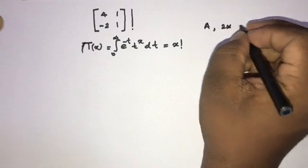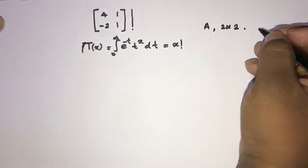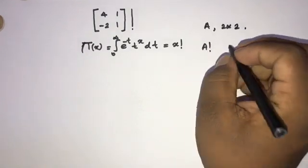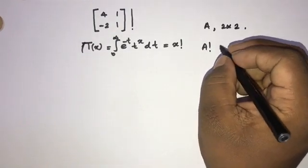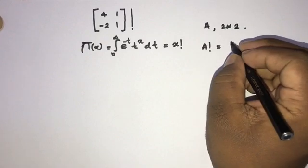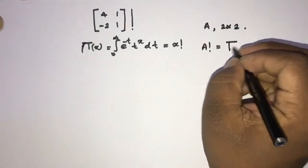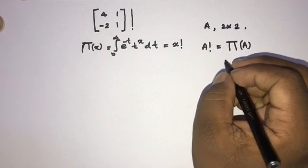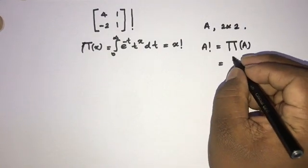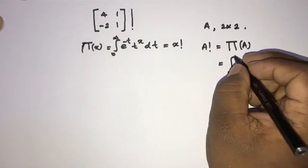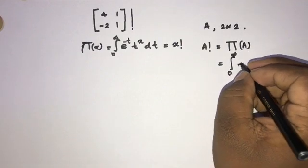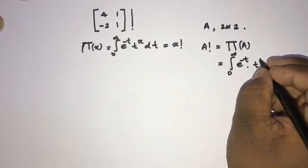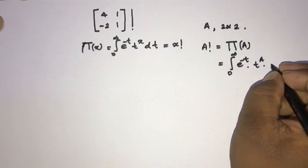Now I'm going to take a 2×2 matrix A that is diagonalizable. We can define the factorial of matrix A as Γ(A), and we know this equals the integral from 0 to infinity of e^(−t) times t^A dt.